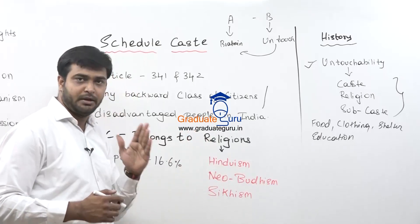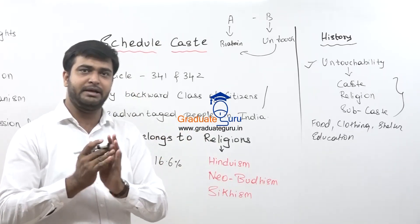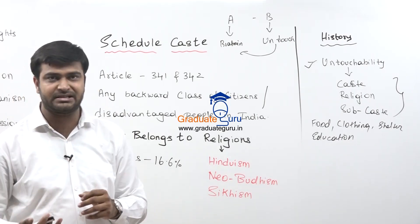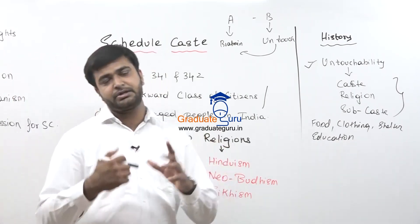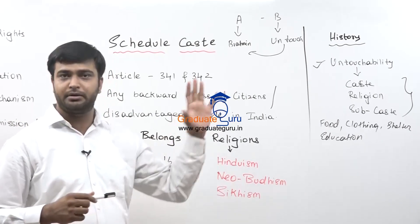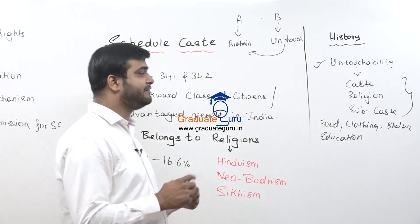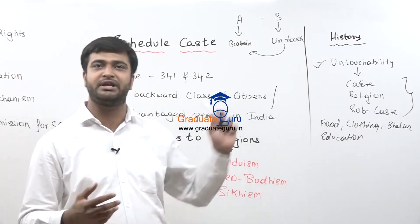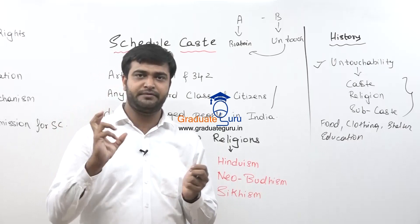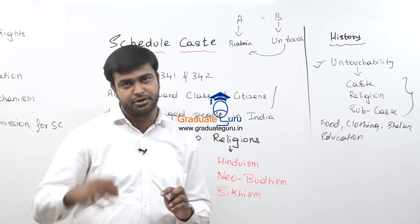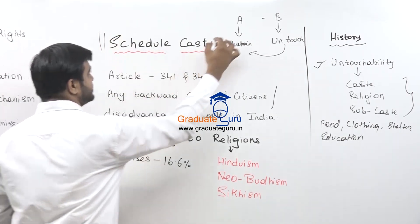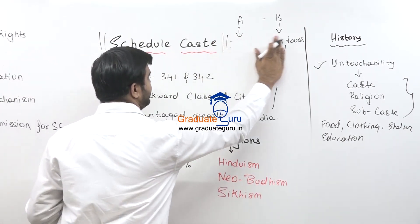To stop this, when Britishers came into India and saw a lot of atrocities happening, they came up with a lot of acts to safeguard these people. After India got its freedom from Britishers, in the Indian Constitution they formed a term called 'Schedule Caste.'